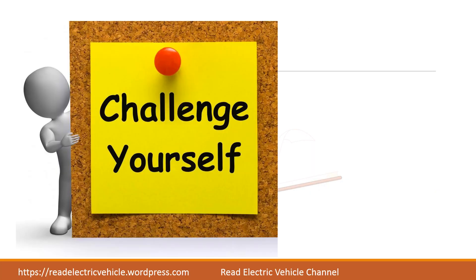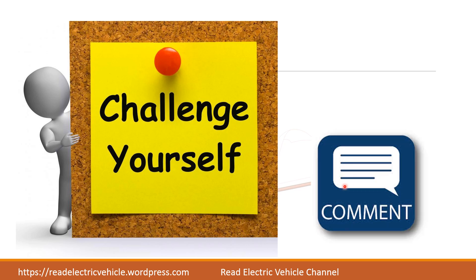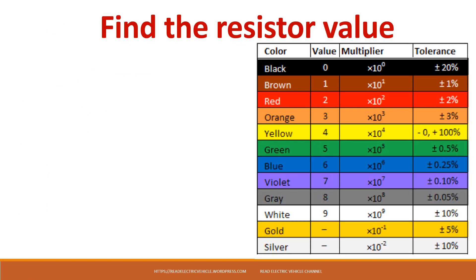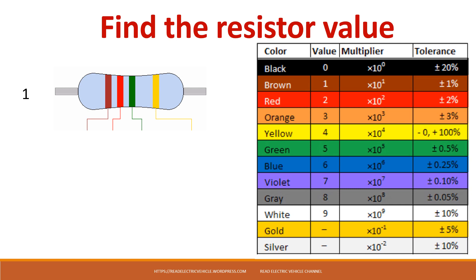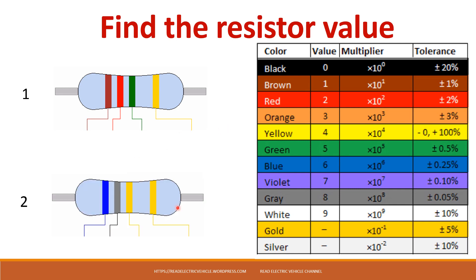By now you have learned how to identify resistors. You can challenge yourself — I will give you two resistors and you write the value in the comment section. The first question: you have brown, red, and green combination. What is the value? Write R equals how many ohms in the comment section.